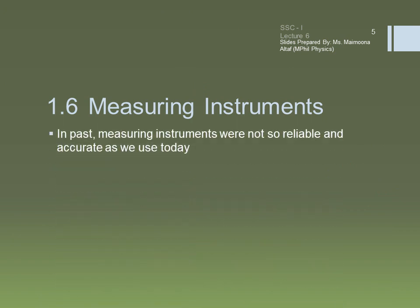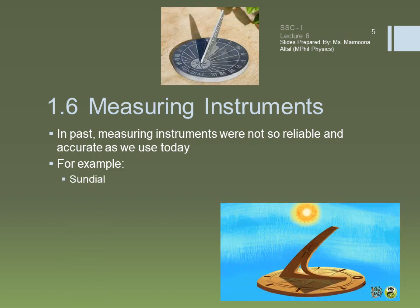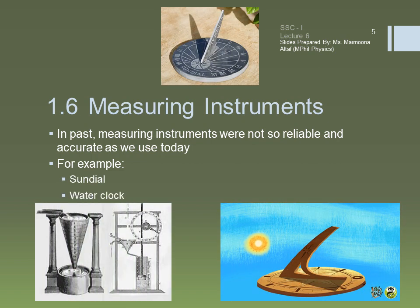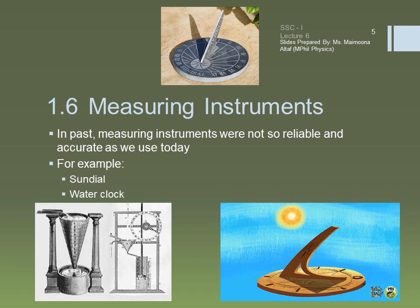In the past, measuring instruments were not so reliable and accurate as we use today. For example, the sundial, the water clock, and other time measuring devices used around 1300 AD were quite crude. On the other hand, the digital clocks and watches used nowadays are highly reliable and accurate.